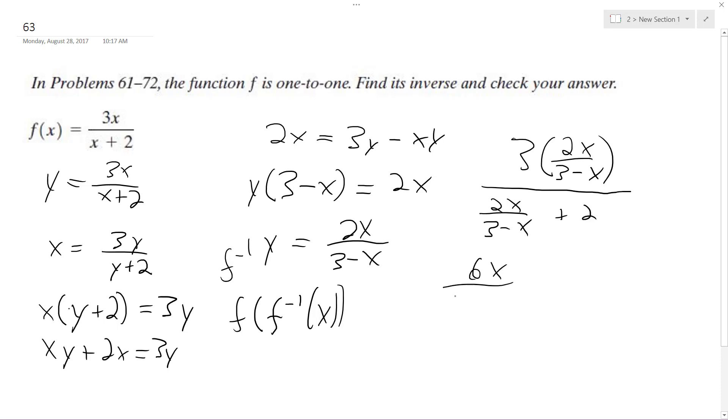So we get 6x over 3 minus x over 2x plus, be careful here, 6 minus 2x all over 3 minus x. These cancel out, and then we get 6x over 2x plus 6 minus 2x. 2x cancel out, we're left with 6x over 6, 6 cancel out, and we're left with x.